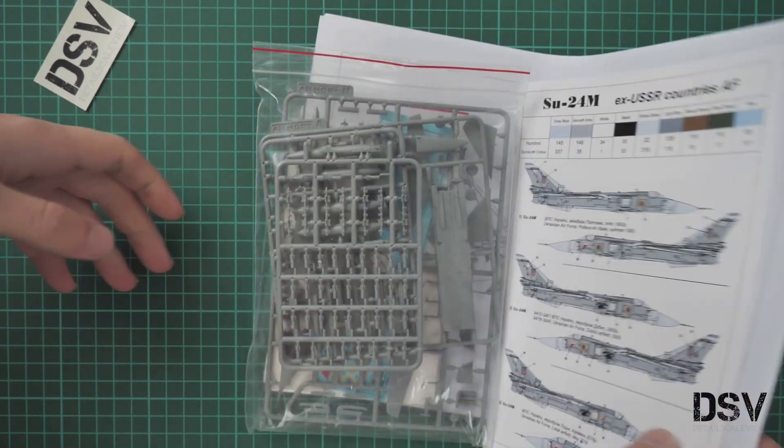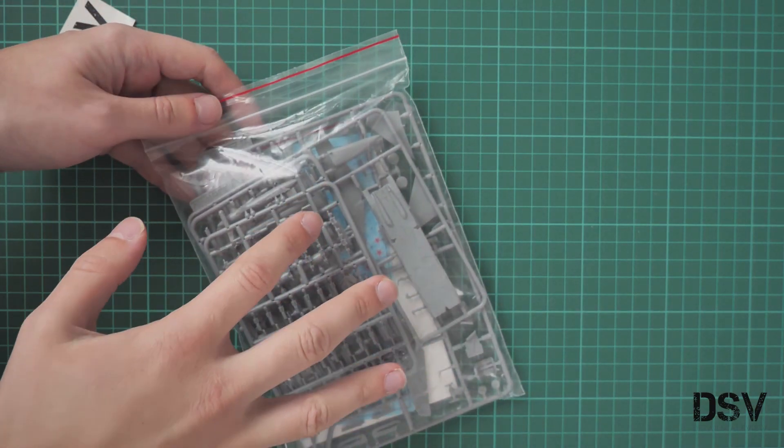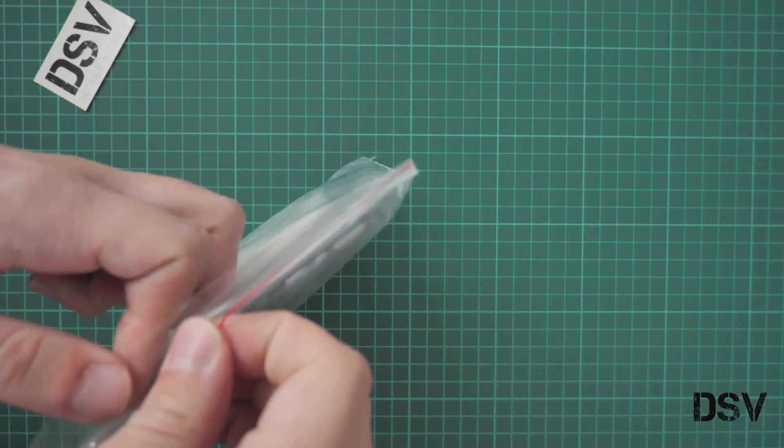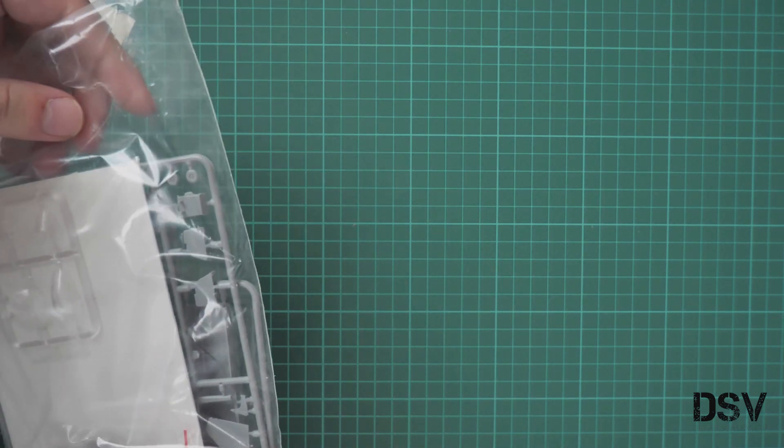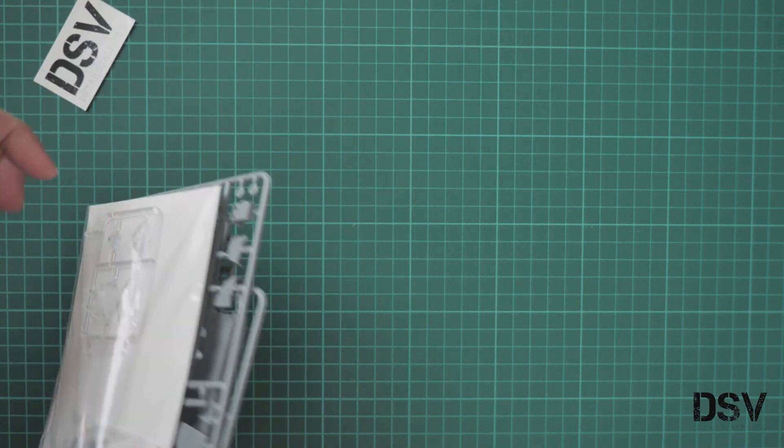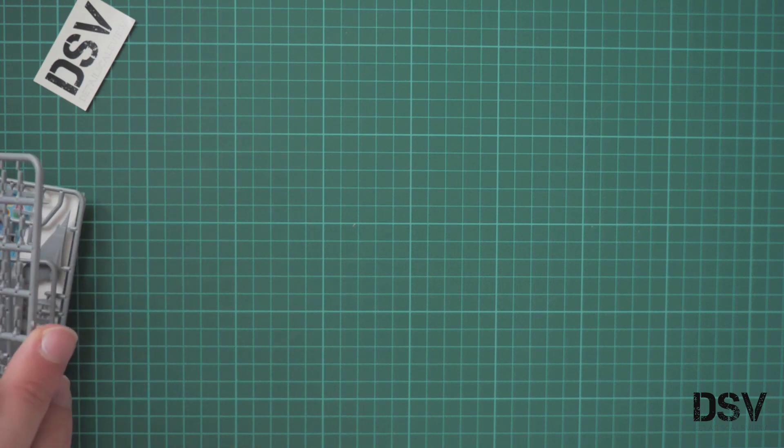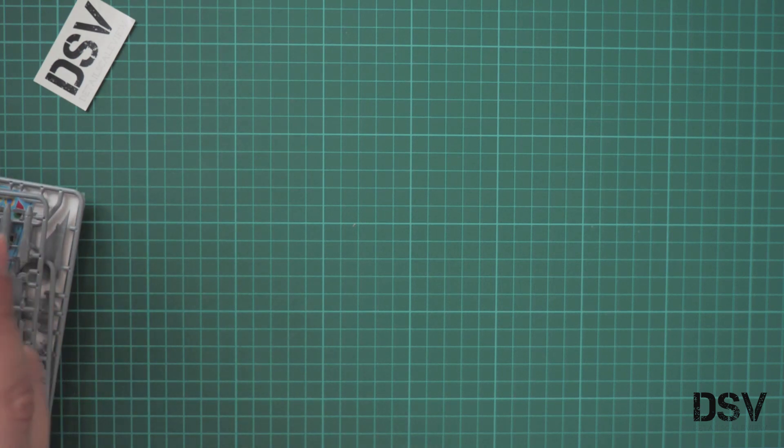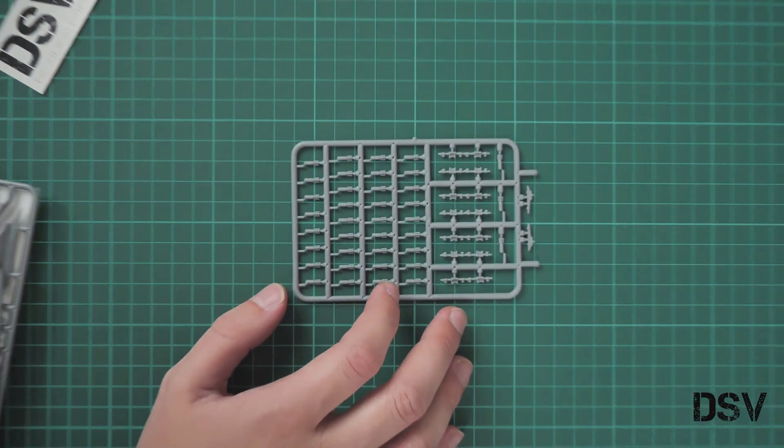We'll check the paper printed material a bit later. First, I'd like to take a look at the plastic parts. They're packed into a ziplock bag, which is cool because you'll be able to reuse it later. Let's start with the plastic parts. The first sprue is already quite interesting.